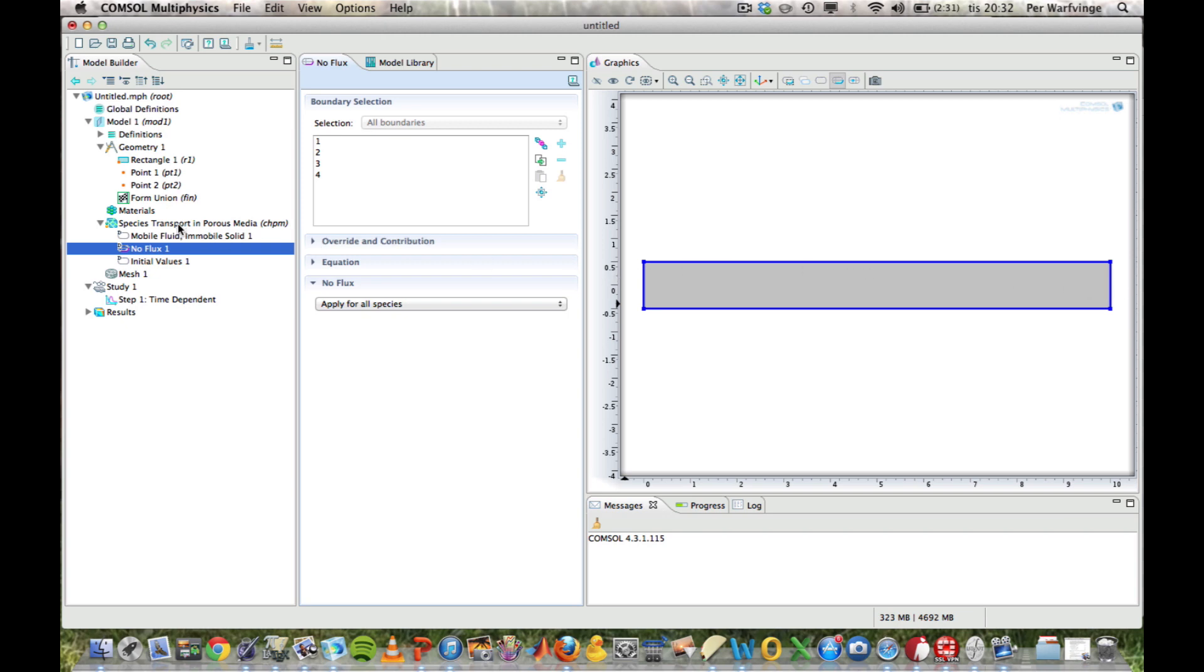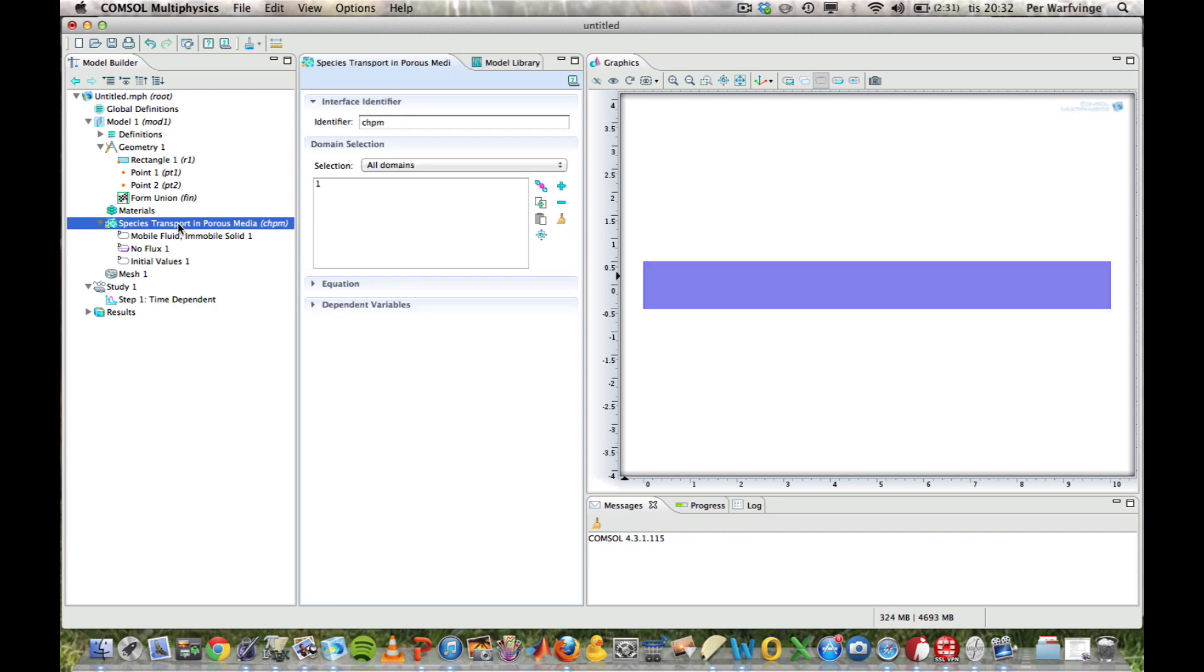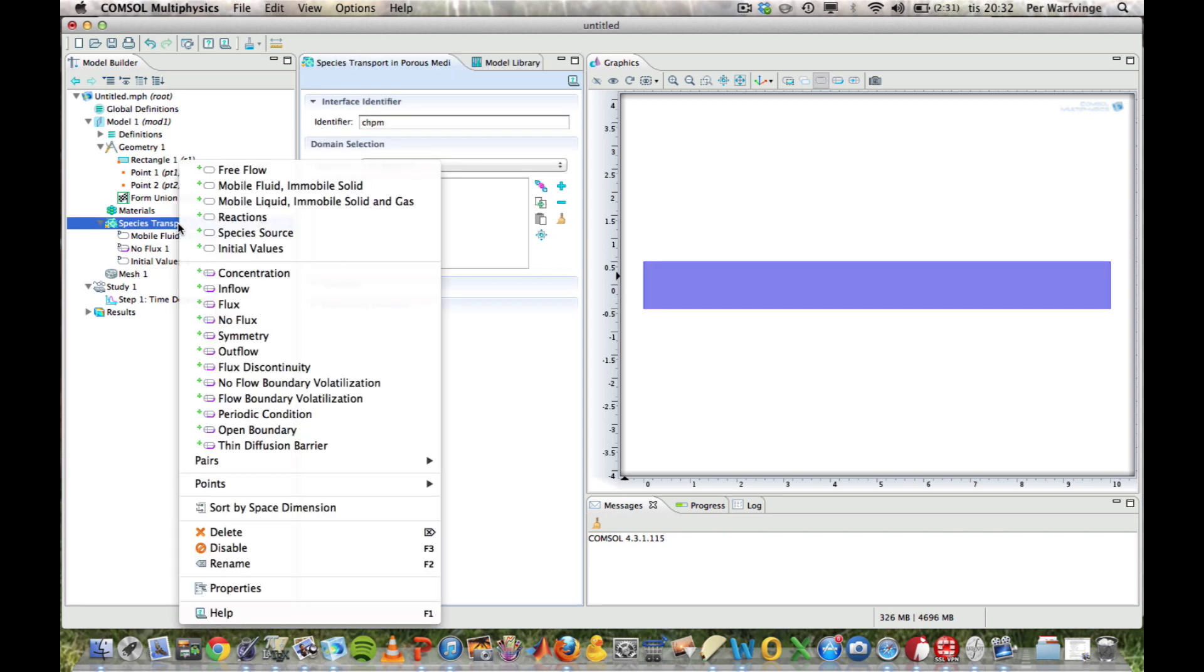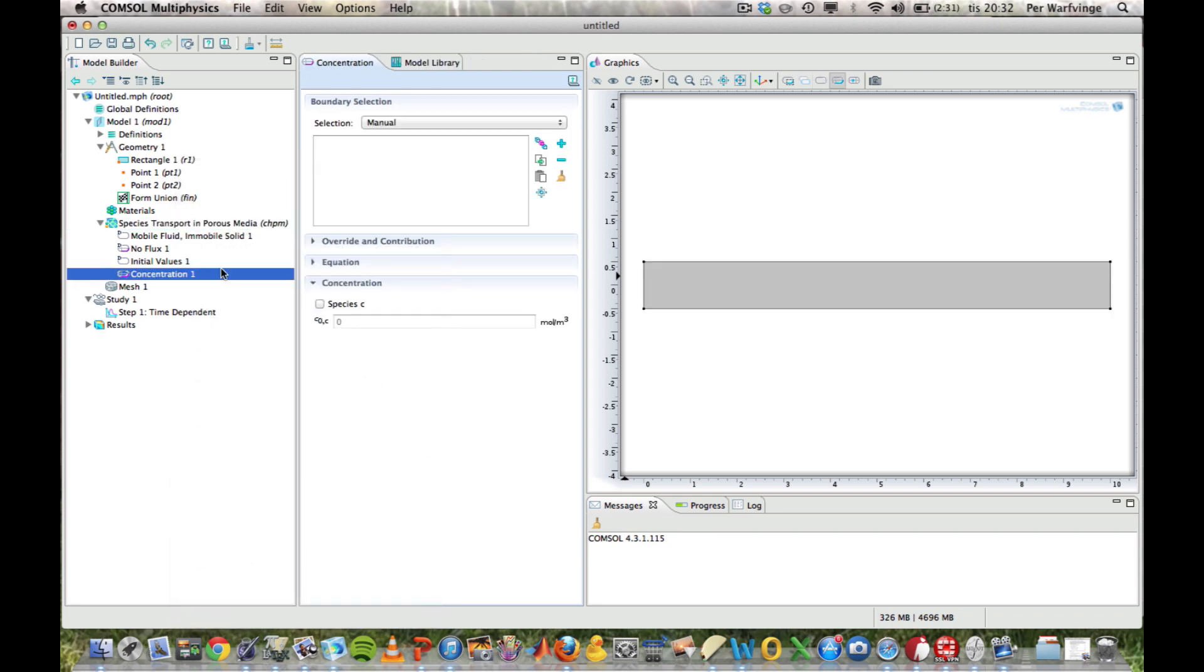And we just want the water to pour out of this rectangle, out to the right. What we do then is to put the cursor there. Right click, and we can select concentration. And I want to select the concentration right here. Add that. Say, it deals with species C, and the concentration should be 1.